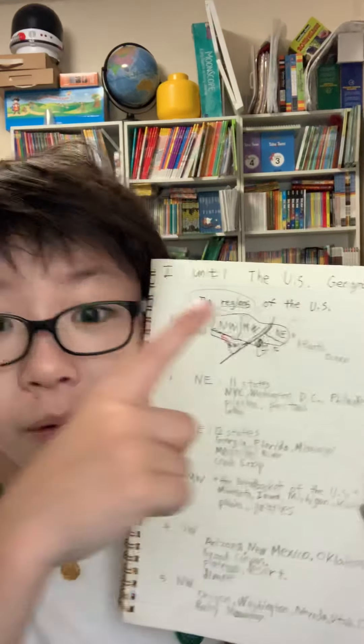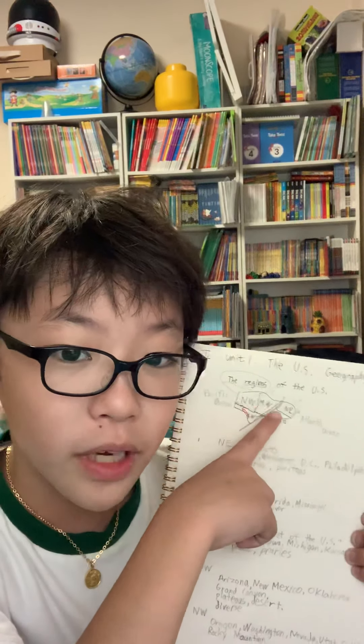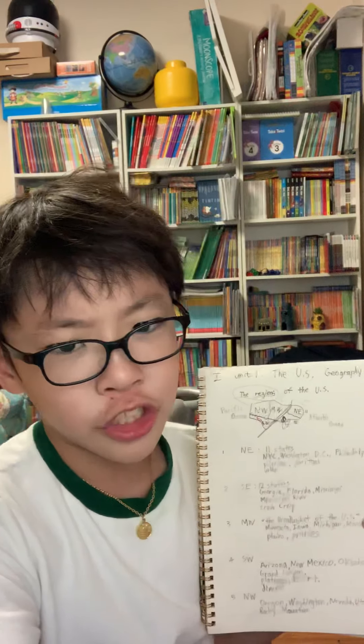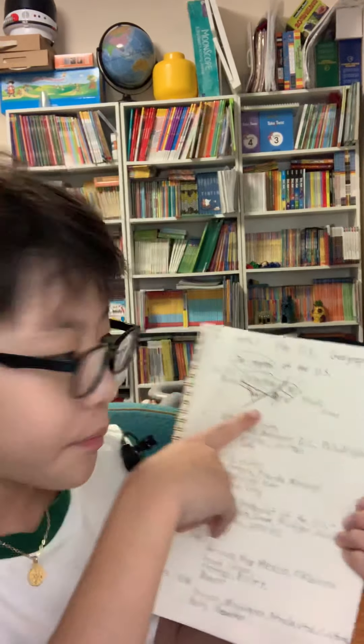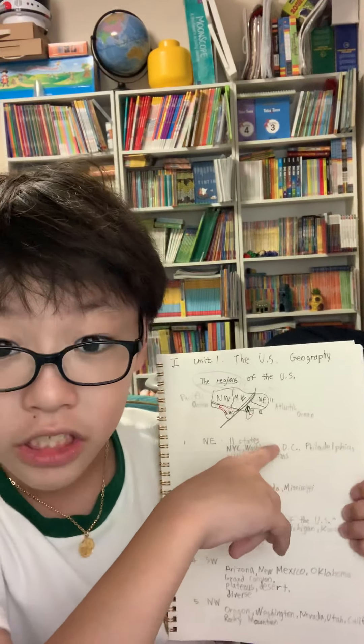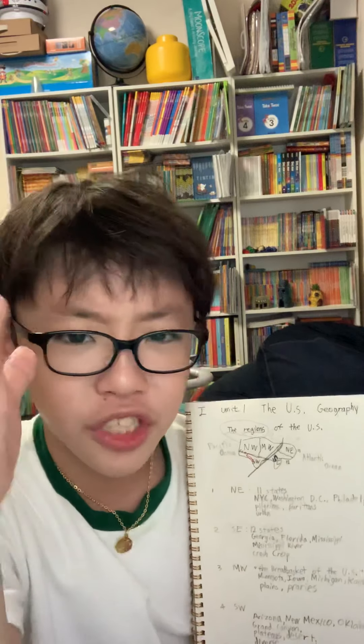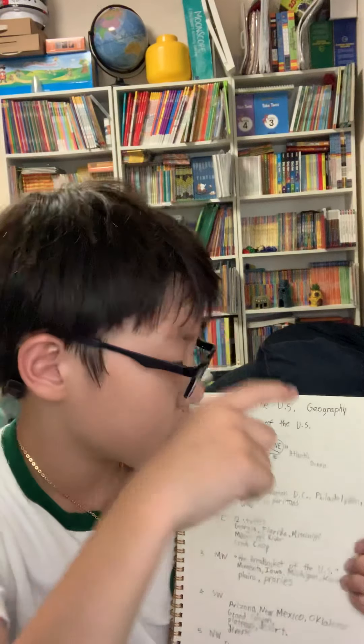Here's a cool thing to help remember where these regions are located. I drew a little map right here. The Midwest doesn't touch any ocean — the best way to remember is which regions are touching an ocean. The Midwest only touches a few lakes. The Northeast and the Southeast are on the right side of the map, touching the Atlantic Ocean.